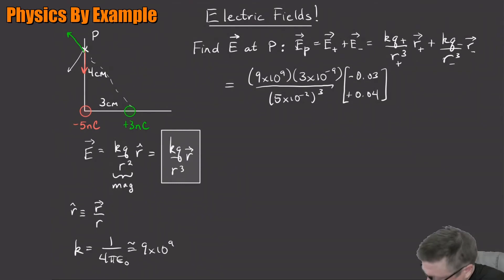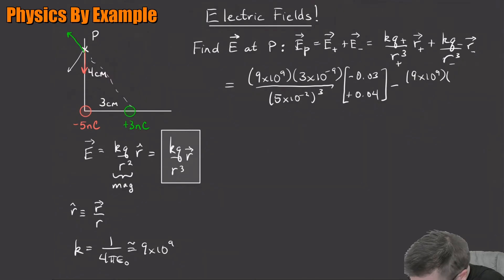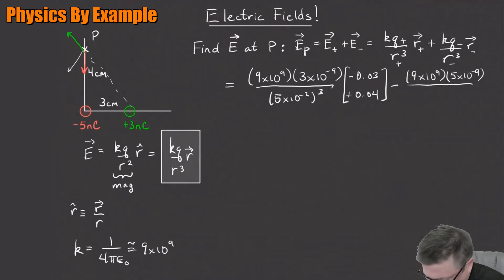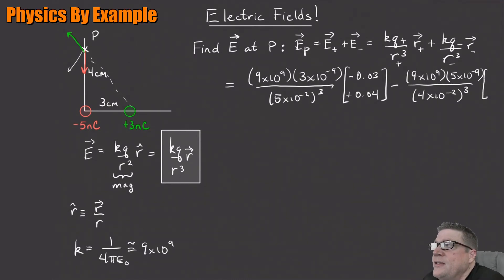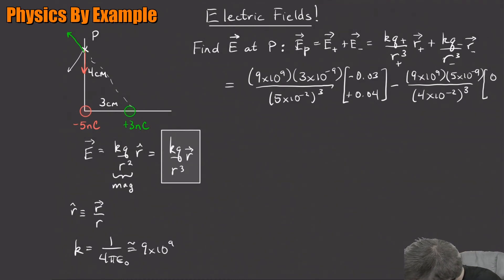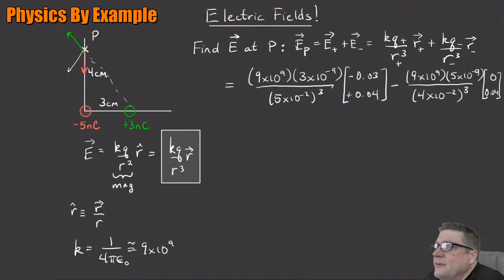Now the minus charge term: that q is minus, so we get minus 9×10⁹ times 5×10⁻⁹, divided by the distance from the minus-5 charge to point P — that's 4 centimeters, or 4×10⁻² meters, cubed. And the vector from the minus-5 charge up to point P: I go up 4 centimeters in y and nothing in x, so the vector is (0, 0.04).